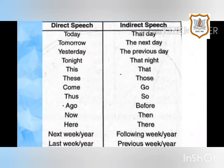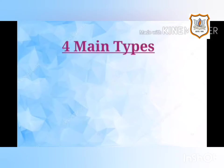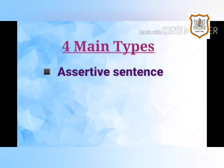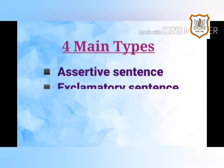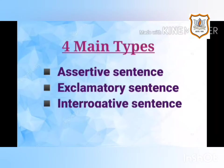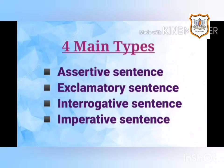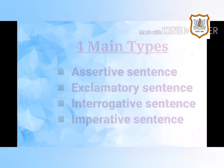All the rules are applicable to all types of sentences. There are four main types of sentences in English: assertive sentence, exclamatory sentence, interrogative sentence, and imperative sentence. Each sentence type follows a different rule in indirect speech.